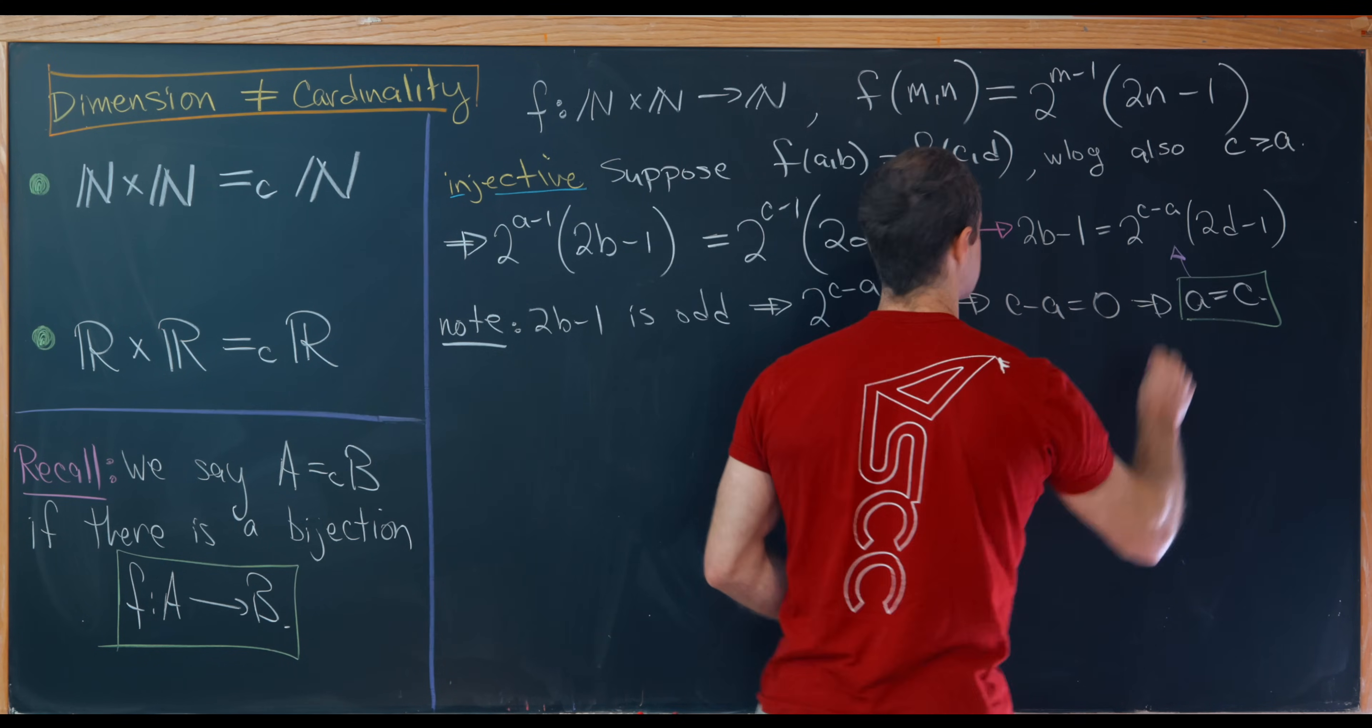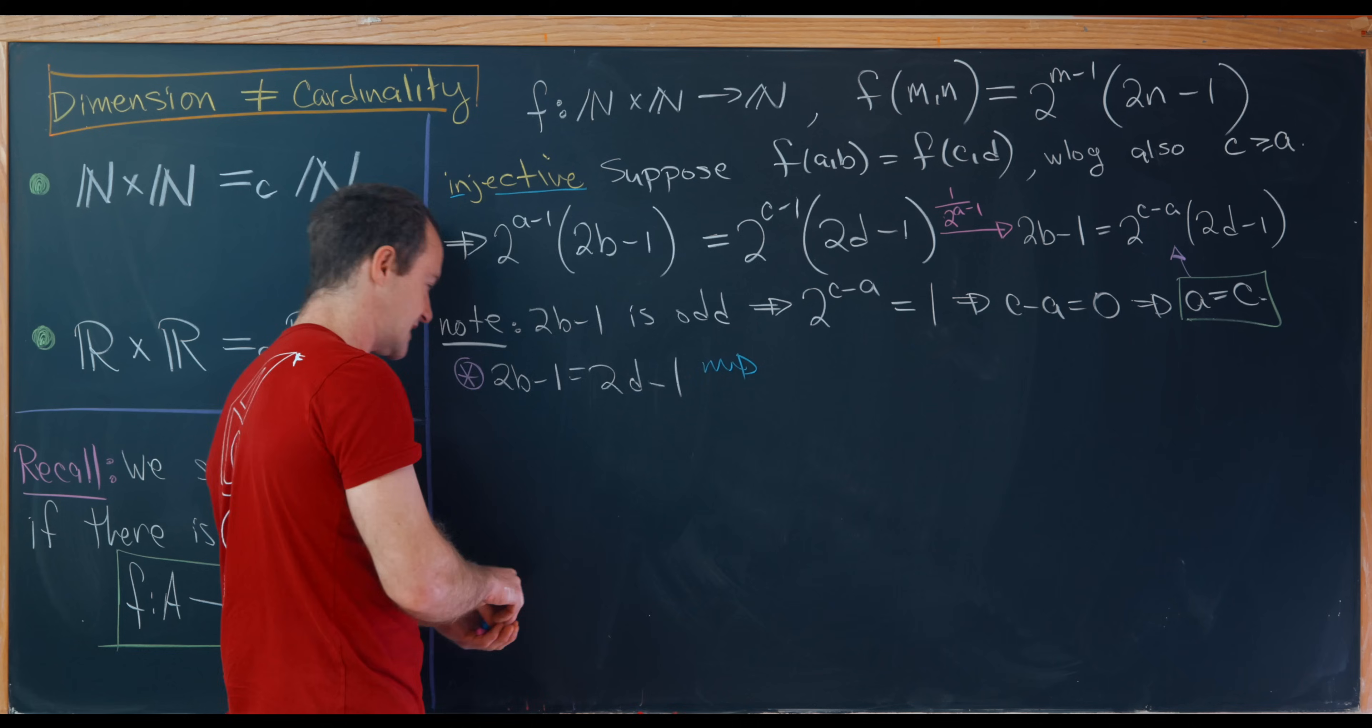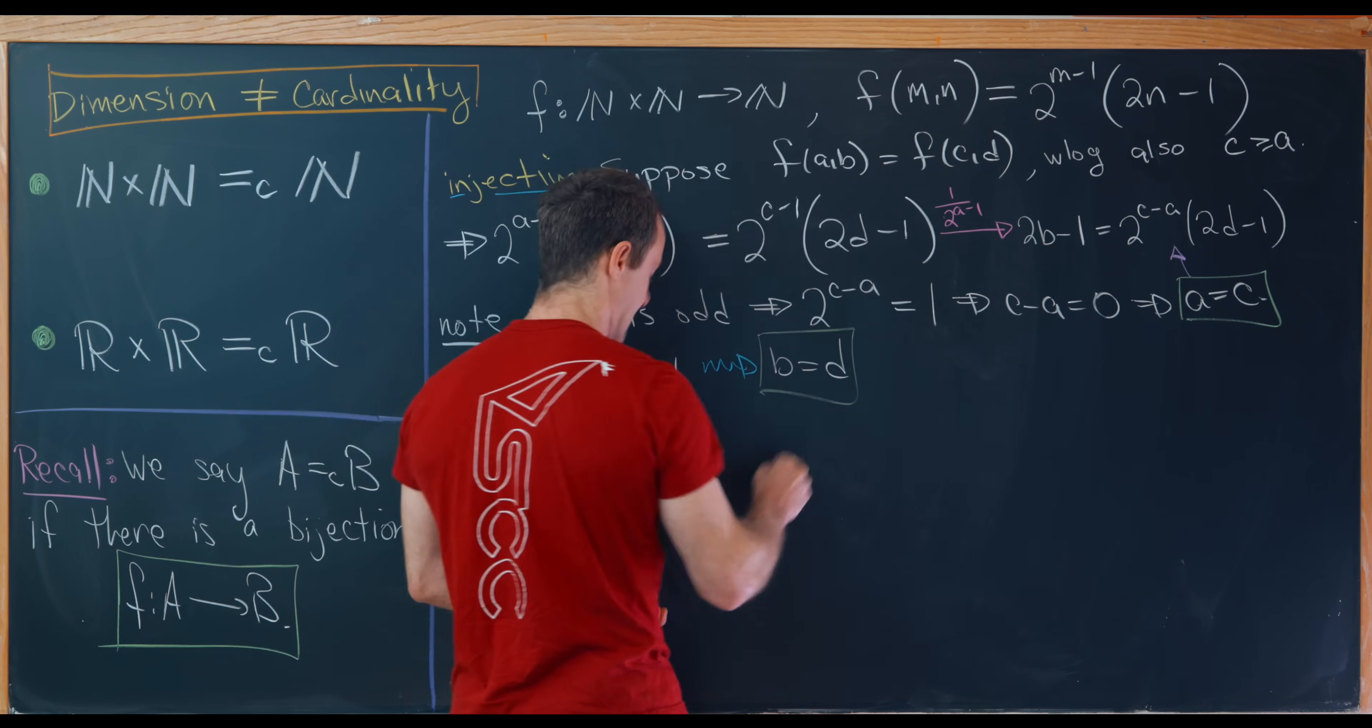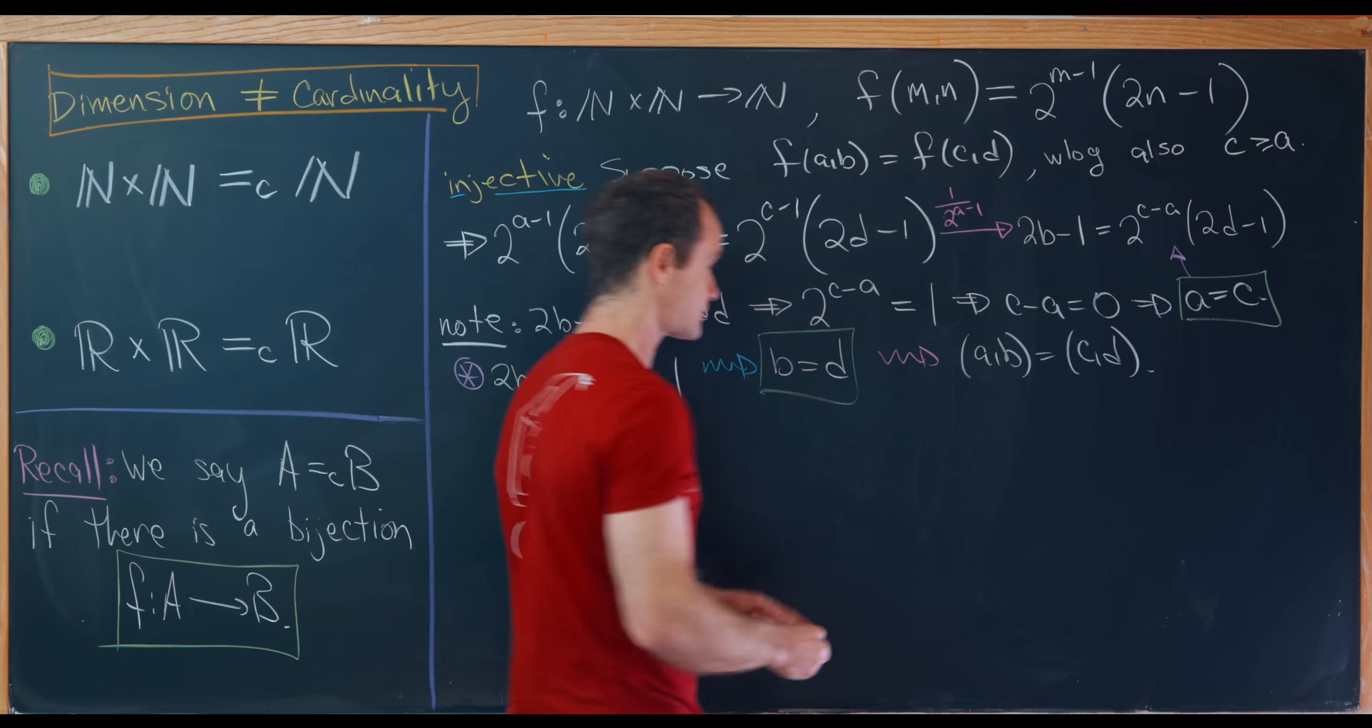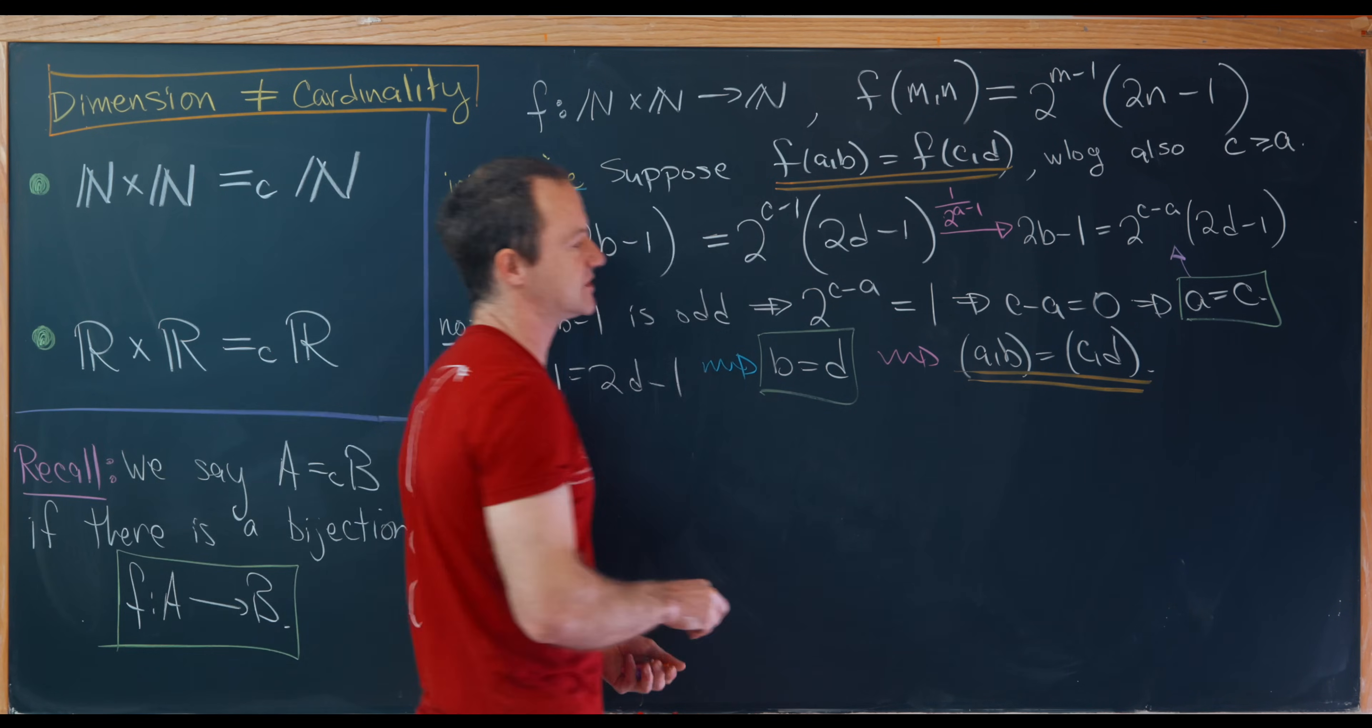But now let's put that back into maybe this equation right here. So looping that into this equation gives us the following: we will have 2b minus 1 equals 2d minus 1. But now it's fairly straightforward to solve or maybe reduce that and see that we immediately get b equals d. But now if we put those two green boxes together we see that the ordered pair (a,b) is equal to the ordered pair (c,d), which is exactly where we needed to end up for this thing to be injective. So just to reiterate, starting here and ending here means our function is injective.